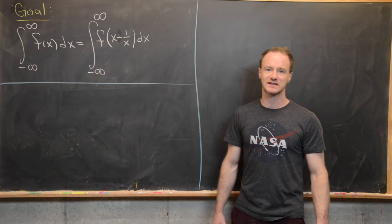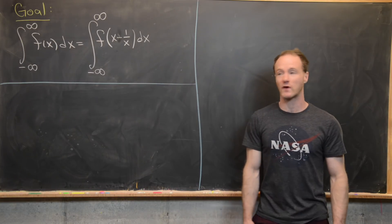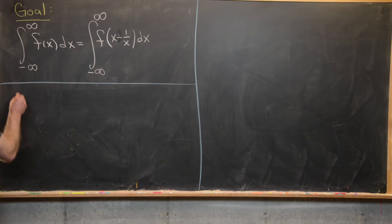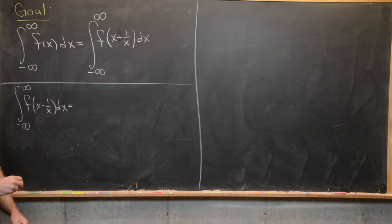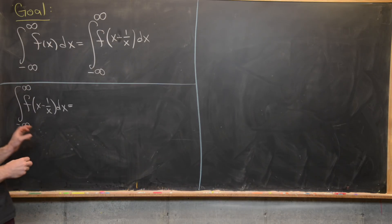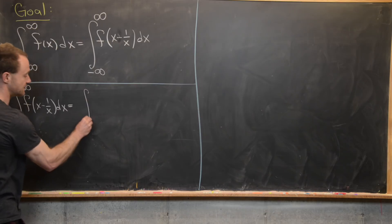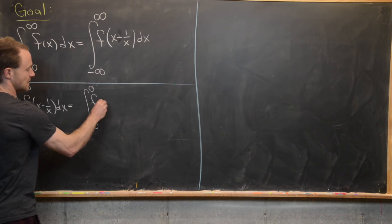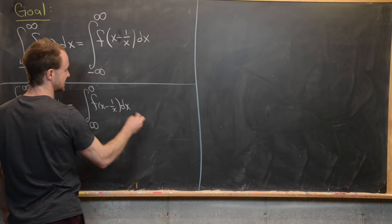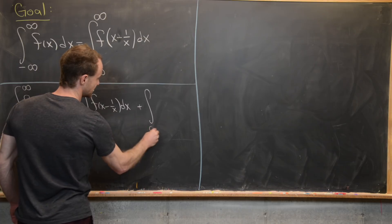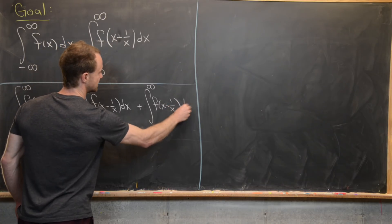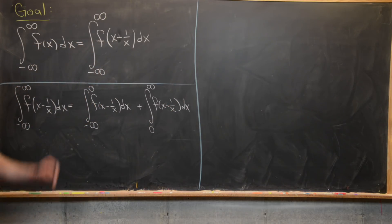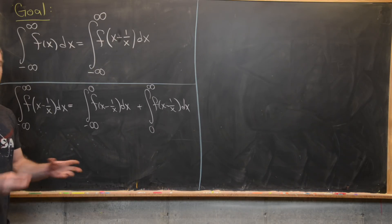We're going to do this by direct substitution and calculation, starting with the right hand side. So we've got this integral from minus infinity to infinity of f(x - 1/x) dx. We're going to split this up into two integrals, which is the precise way to handle an integral over the entire real line. So we'll split this up into the integral from minus infinity to zero plus the integral from zero to infinity of f(x - 1/x) dx.